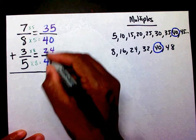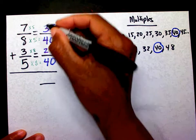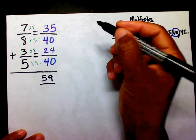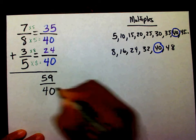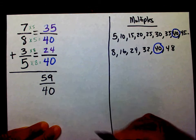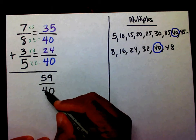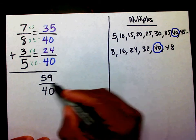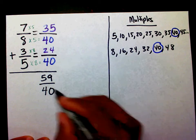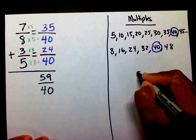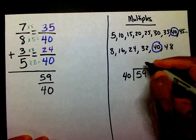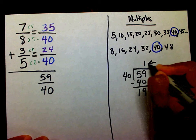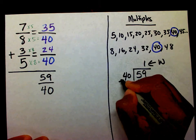Now that I have the same denominator, I'm going to add my numerators. 35 plus 24 is 59, and I'm going to bring down my new denominator of 40. This is an improper fraction because my numerator is larger than my denominator, so I need to change it into a mixed number. I'm going to do 59 divided by 40. 40 goes into 59 one time. Subtract — that's going to be 19. This is my whole number, this is my numerator, and this is my denominator.